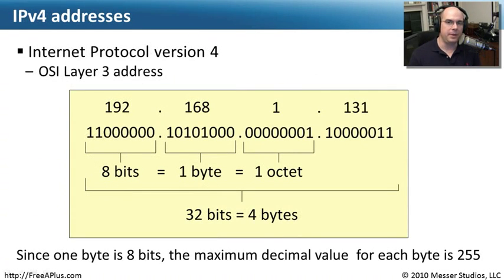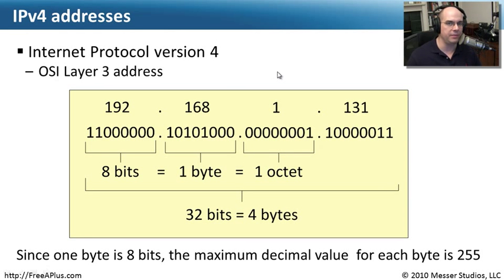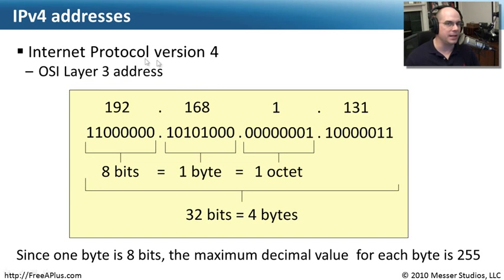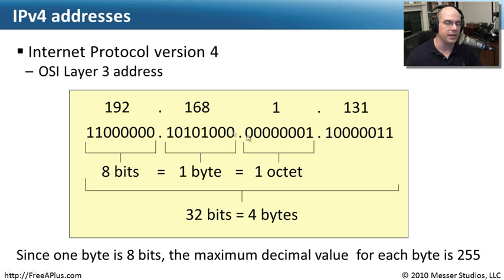The TCP/IP protocol uses an IP address, and here's a breakdown of this IP address format. You'll sometimes hear this referred to as Internet Protocol Version 4, or IPv4. It's more common to hear the next version called IPv6 — IPv5 was completely skipped, so we went from 4 to 6. For those keeping track of OSI layers, an IP address is a Layer 3 address. Let's break apart an IP address and what it really makes up.